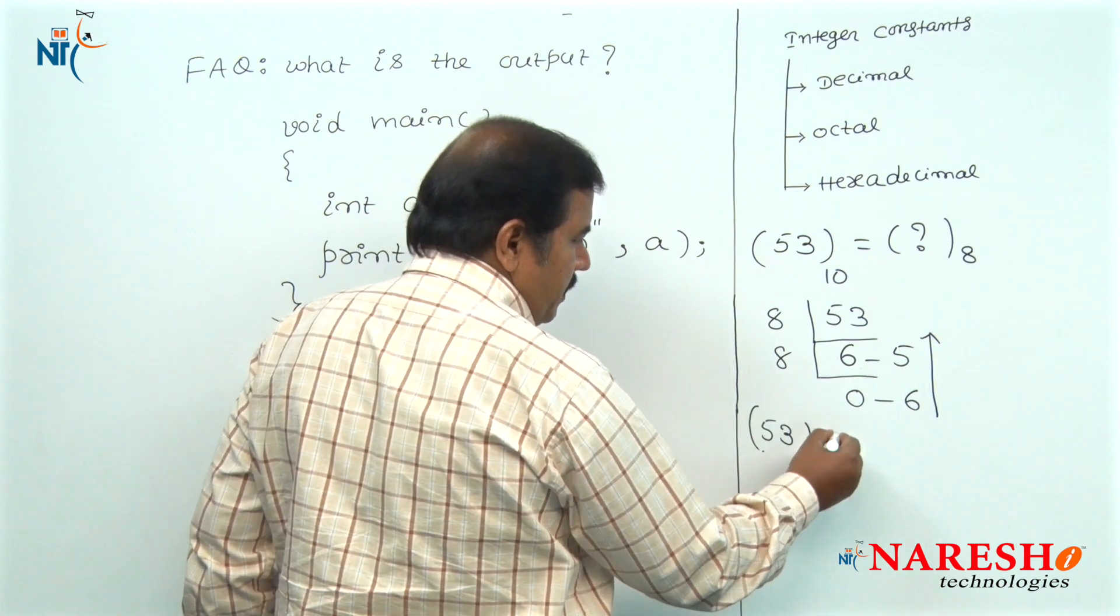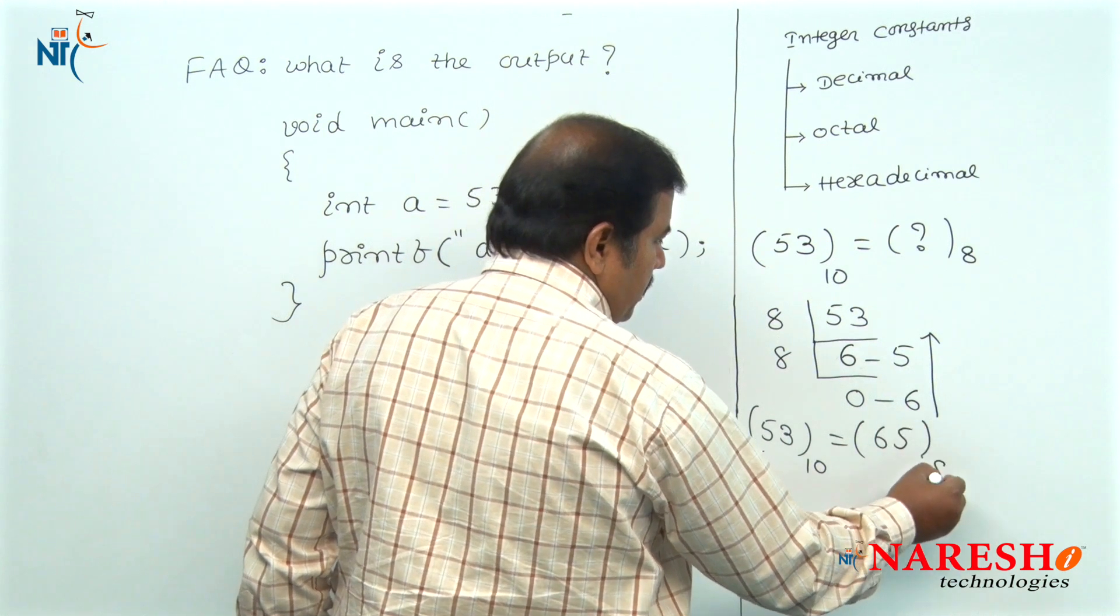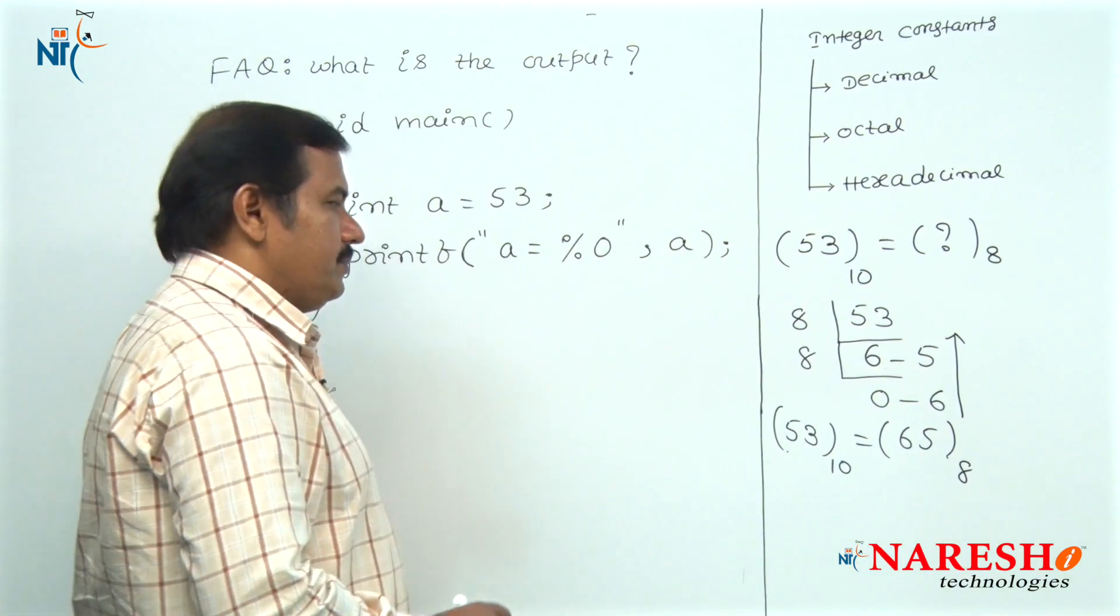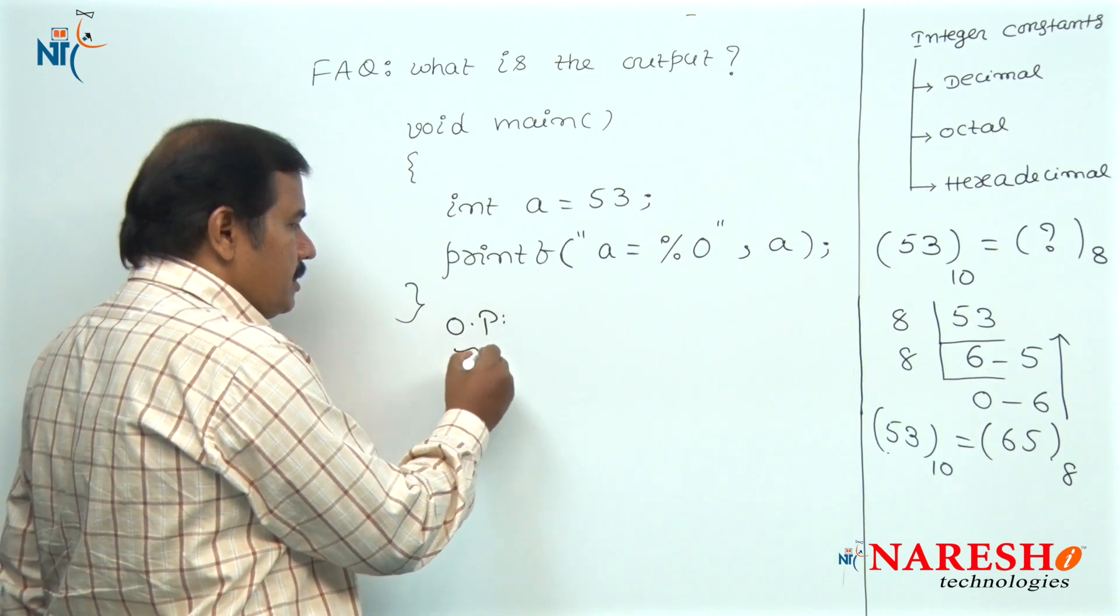For this decimal integer constant, the equivalent octal integer constant is 65. Hence, the output of this code is 65.